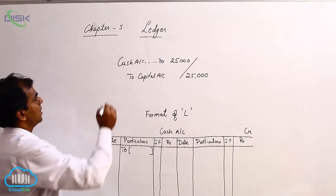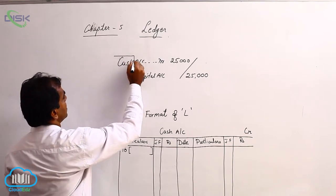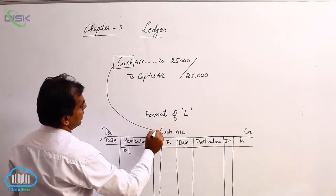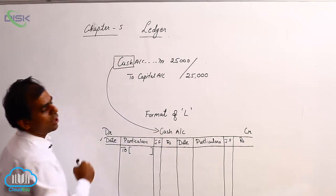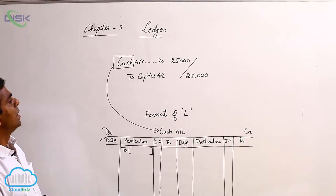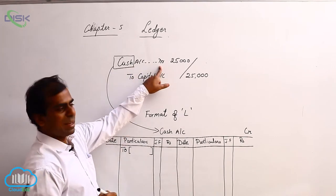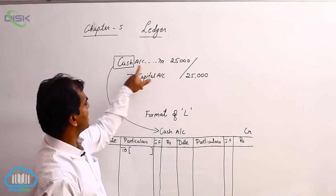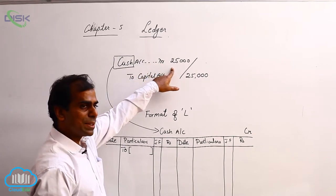As a result, this cash is becoming here the name of your ledger. Cash account debit, so in journal entry, you have put this cash in the debit part and the amount is 25,000.